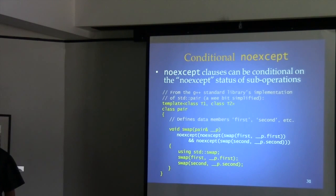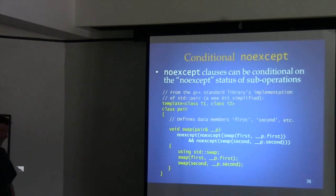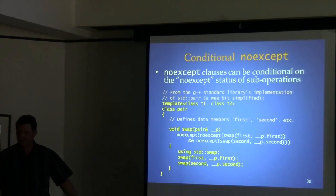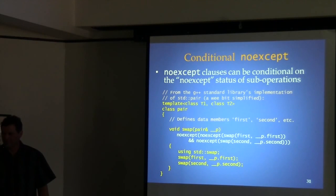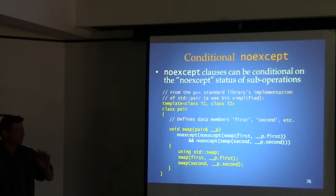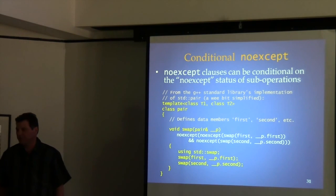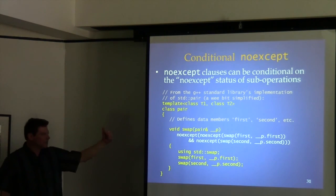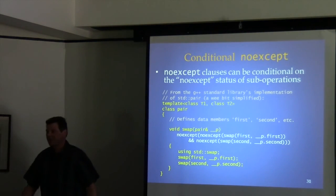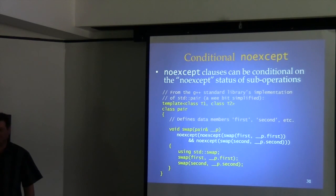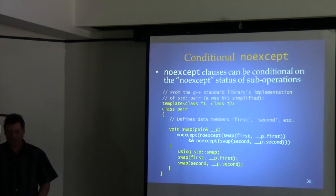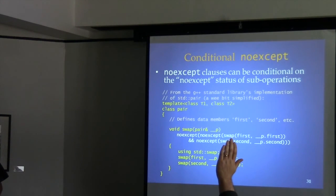Question: if you naively declared your swap noexcept but the type you specialized on actually does throw, would the compiler catch that? What will happen is a runtime termination when that exception tries to escape the swap. The compiler is not obliged to detect it at compile time — it may be a quality-of-implementation issue whether some compiler can figure that out. If you declare noexcept and something actually throws, it terminates. That's it.